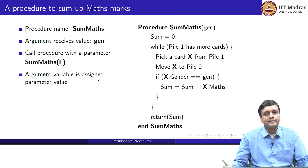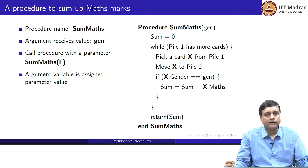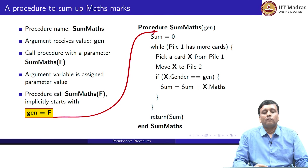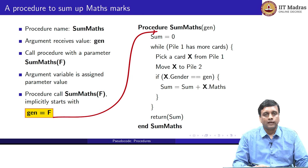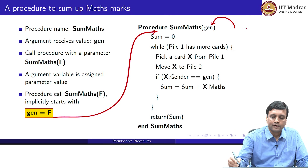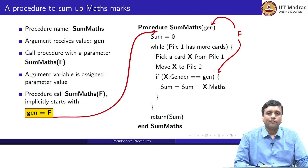What happens inside the procedure is that this particular assignment happens — it is as though we insert a statement there. When we call it with F, it is as though this variable 'gen' is assigned the value F inside the procedure. That is how you should think about it. From outside, the variable gets the value F, so when it comes to the check, the value being compared is the value passed from outside, which is F.